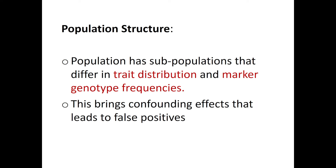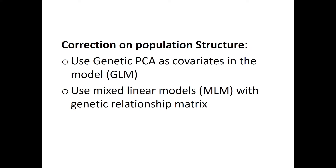GWAS takes into account population structure because population structure affects the reliability of the association. In your population you could have subpopulations that, due to coming from different regions and genetics, have different trait distributions. For example, population A shows less of a trait than population B, and the marker genotype frequency differs among these subpopulations. This kind of structure brings confounding effects that lead to spurious associations. Therefore, during GWAS analysis, population structure is taken care of by using principal component analysis.